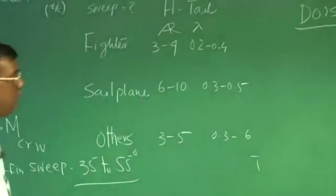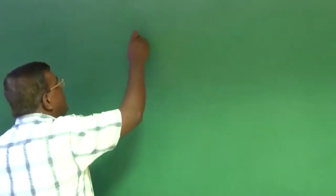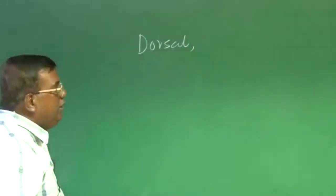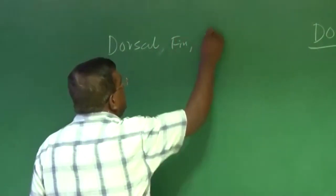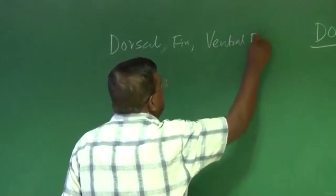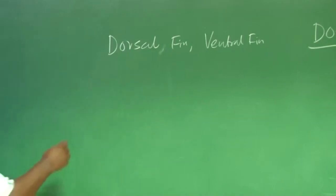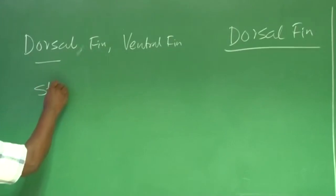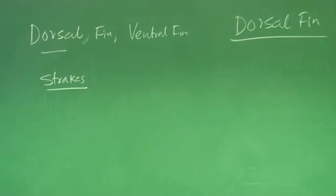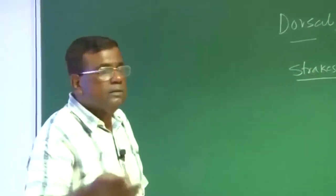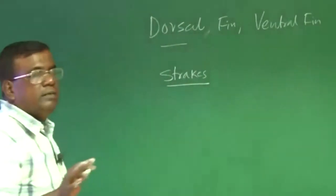Remember dorsal fin and ventral fin — two types of strakes we discussed yesterday. Dorsal fin and ventral fin are basically strakes. Strakes are regularly used on fuselages to create vortices, which help in attaching the flow and give more energy to the flow via vortices. Whether dorsal fin or ventral fin, they are all actually strakes characterized by strake properties — they are basically vortex generators. That is important.